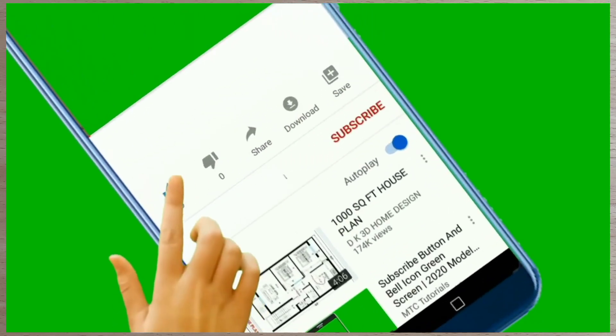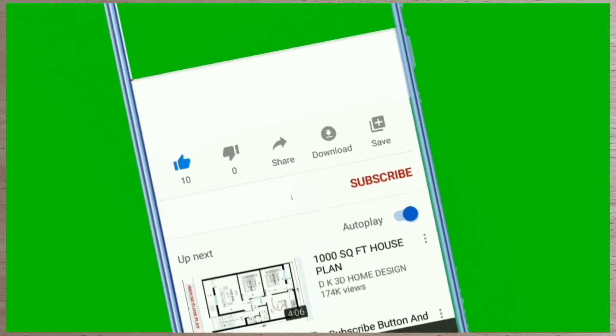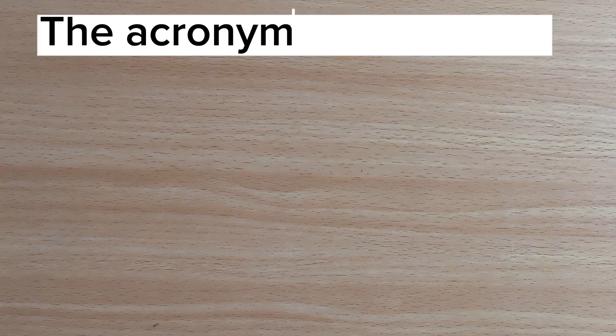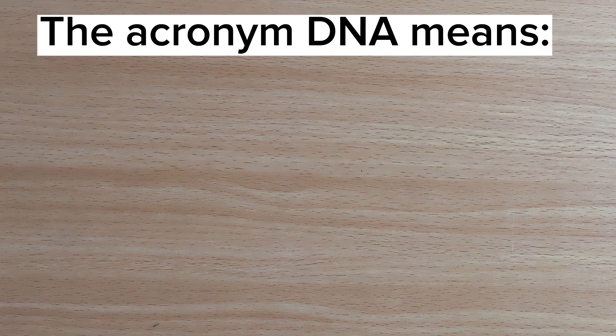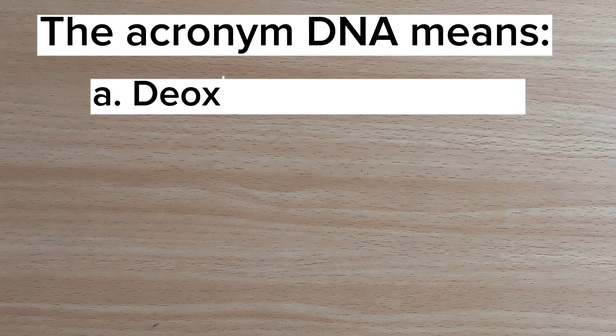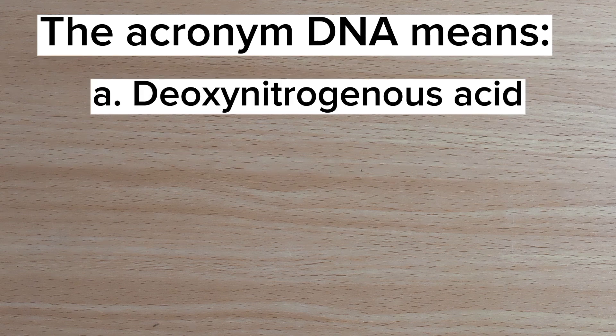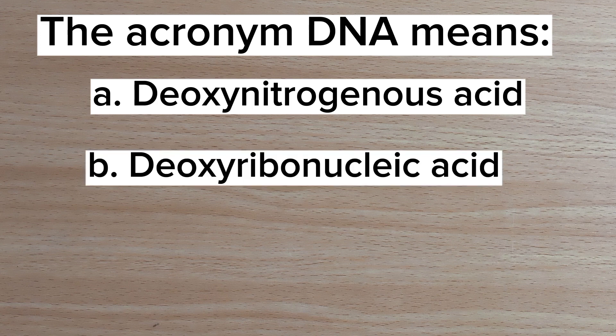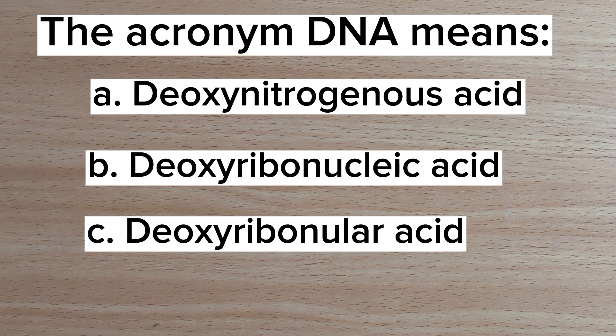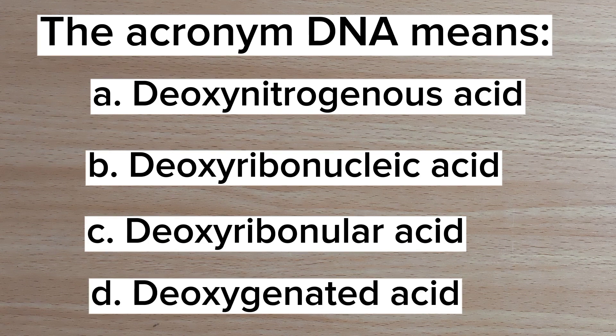Hey guys, here are 15 objective questions to test your knowledge on DNA. Please click on the subscribe button and the like icon on your screen as you watch this video. Number one: the acronym DNA means — A. Deoxy nitrogenous acid, B. Deoxyribonucleic acid, C. Deoxyribonular acid, D. Deoxynated acid.